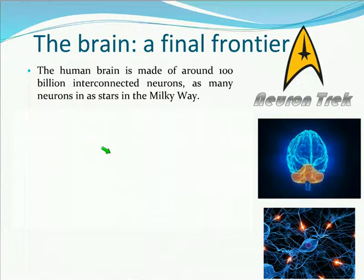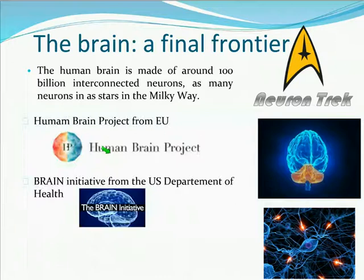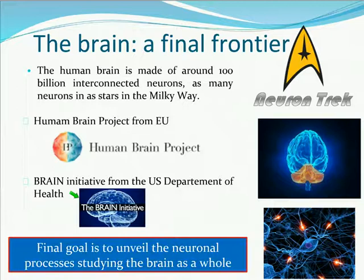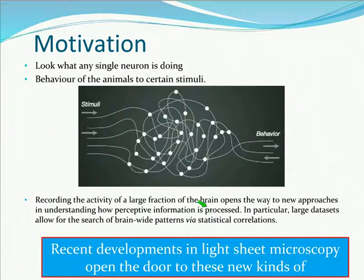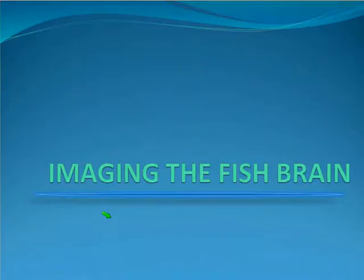The brain is made of billions of interconnected neurons. In recent years, there has been enormous interest — including major projects from the European Union and the US Department of Health — to discover how the brain works. The goal is to understand the brain as a whole system, not just single neurons or separate tissues. If we can record all brain activity, we can see how different parts are interconnected and react to stimuli to create behavior. Light sheet has opened the door to this research by enabling simultaneous imaging of thousands of neurons.